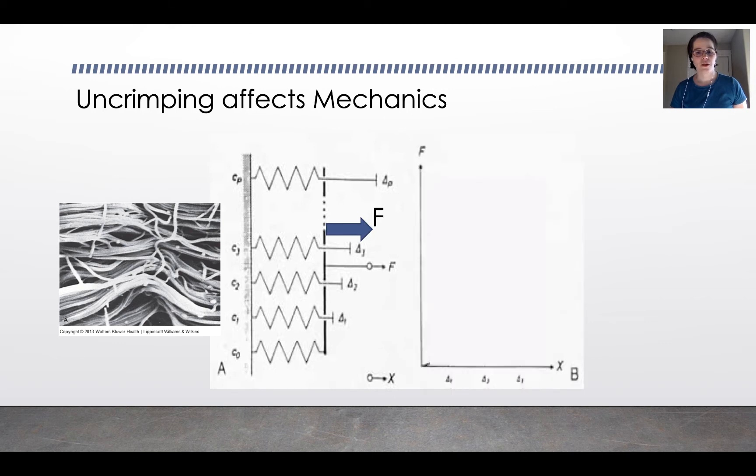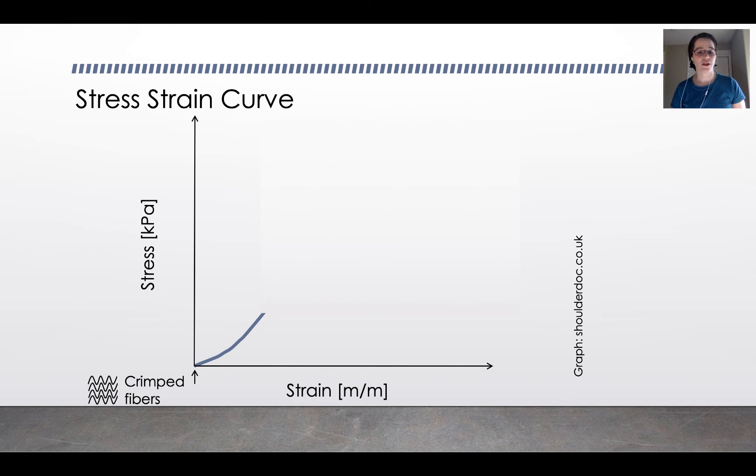If we apply a force and graph the force as a function of the amount of stretch, we'll end up with a graph that gets increasingly steeper as more and more of the springs, our collagen fibers, are engaged. And we call this the toe region of the tendon, and it's the result of the crimped fibers straightening up.